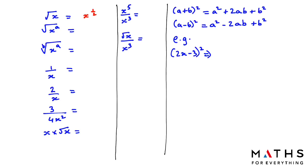The next one is the nth root of x to the power of a. If you have x inside the radical and there is a power, that power becomes the numerator. When there is no number in the root, we write 2 as the denominator. So the result is x to the power of a over 2. Similarly, if there is a power both on x and in the root, the power of x is the numerator and the root number is the denominator.